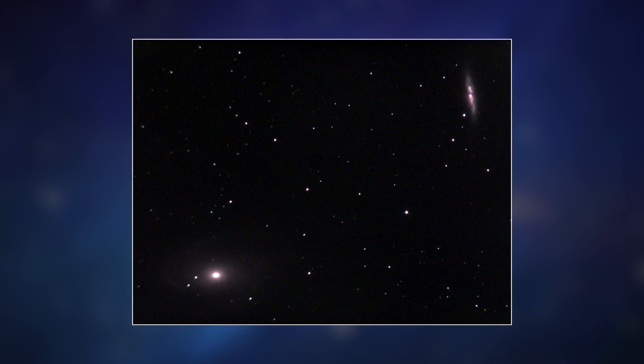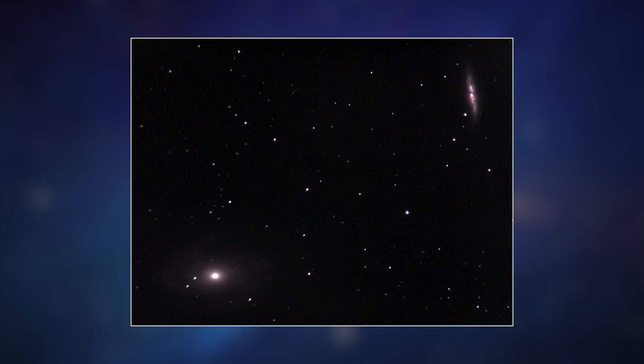Here's an example of what you can see with the new EVscope 2. Here's a really nice image of two galaxies, M81 and M82 at 12 million light years away. How do I know all this? Because I read it in the app.